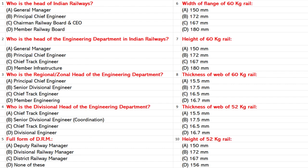Height of 52 kg rail: A. 150 mm. B. 172 mm. C. 167 mm. D. 156 mm. Answer: D. 156 mm.